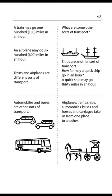Page 63. A train may go 100 miles in an hour. An airplane may go 600 miles in an hour. Trains and airplanes are different sorts of transport. What are some other sorts of transport? Ships are another sort of transport. How far may a quick ship go in an hour? A quick ship may go 30 miles in an hour. Automobiles and buses are other sorts of transport.